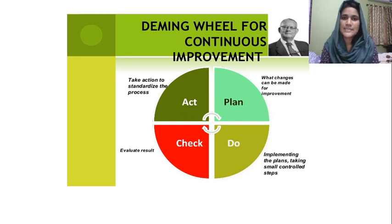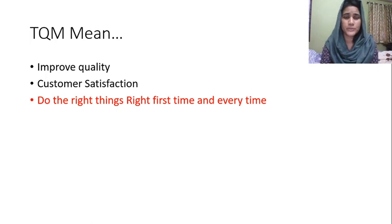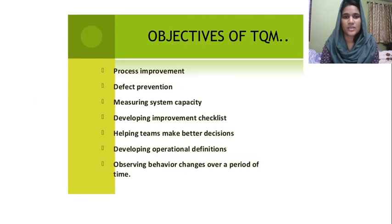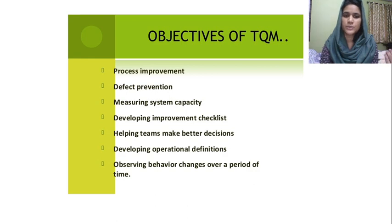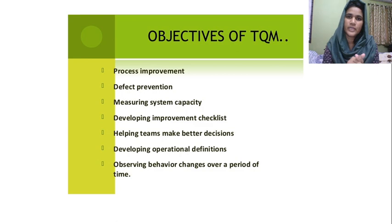The third step is to check whether the plan implementation results in the expected outcome — evaluate. The fourth step is Act — how to standardize the process and actions. These four steps are in parallel. The number one goal of TQM is to do the right things right, every time — improve quality and customer satisfaction.